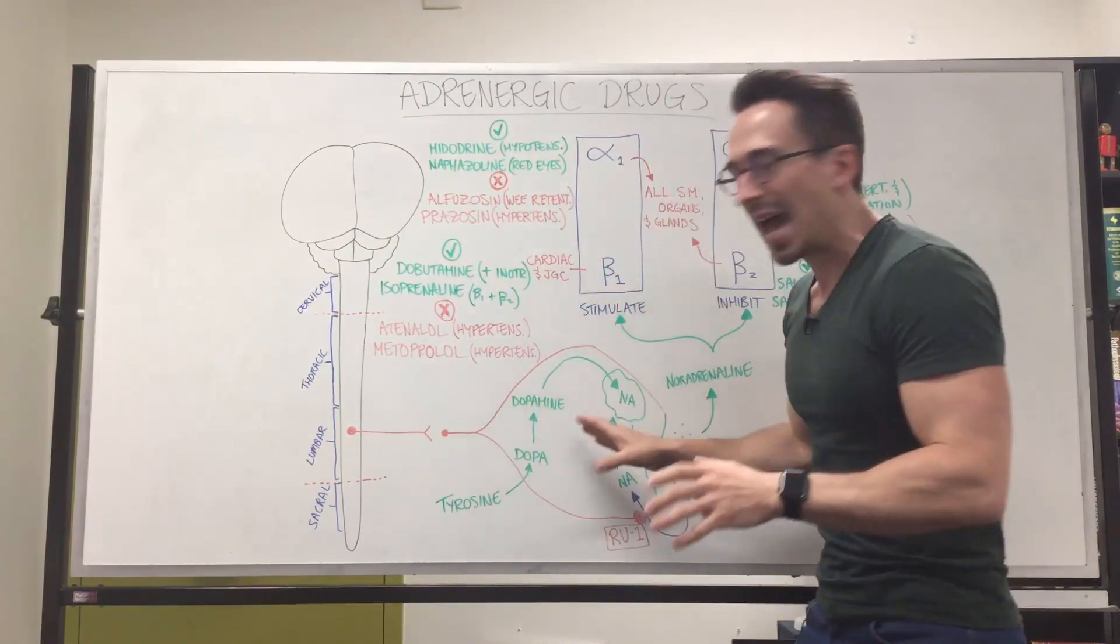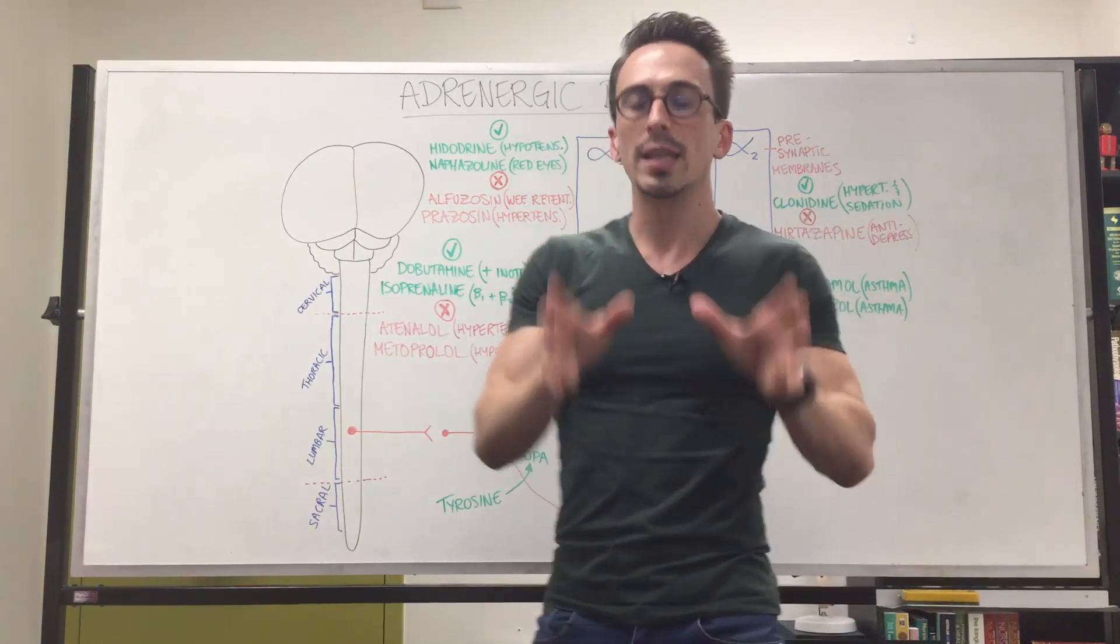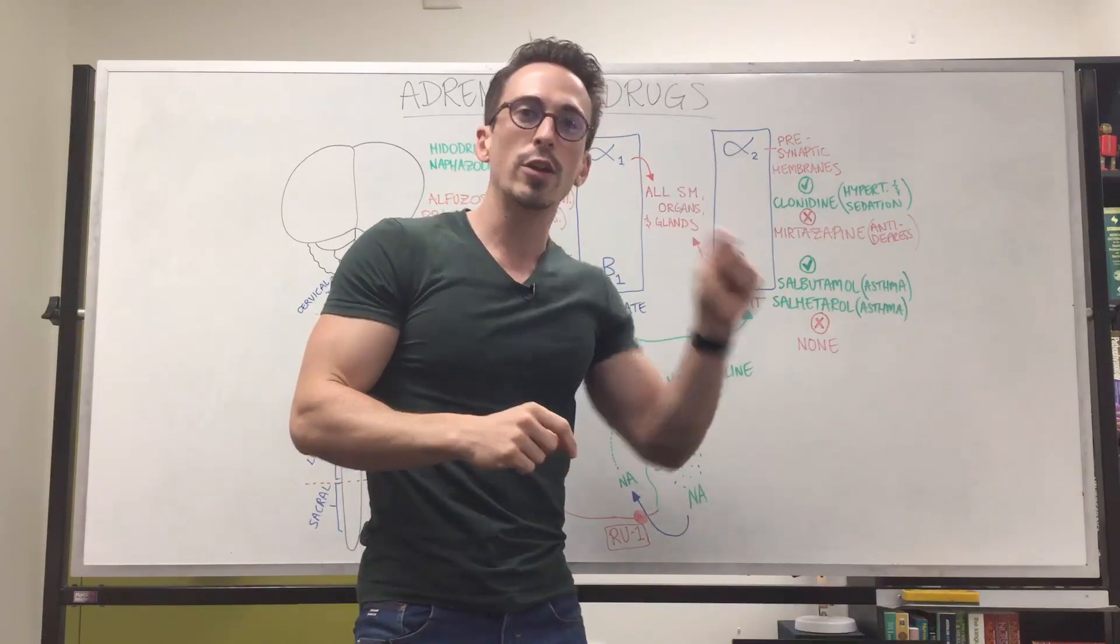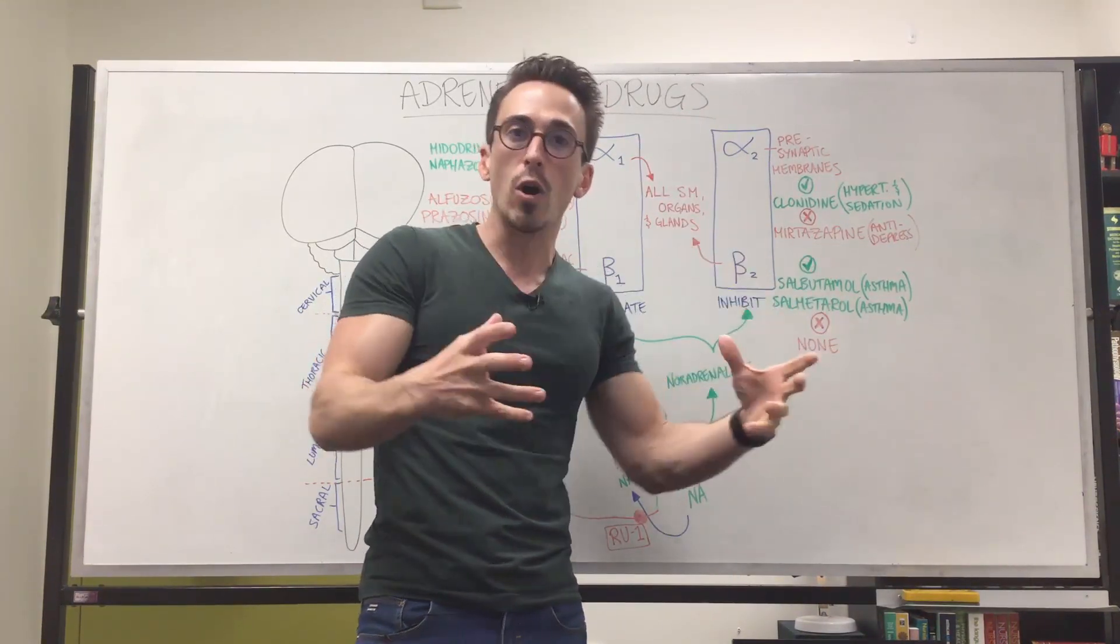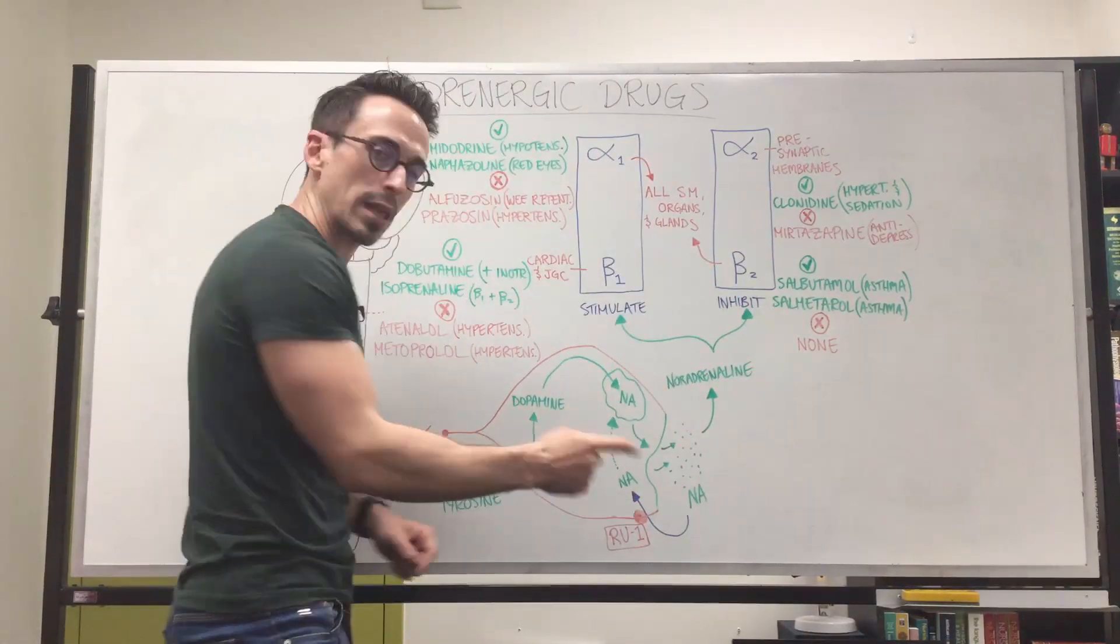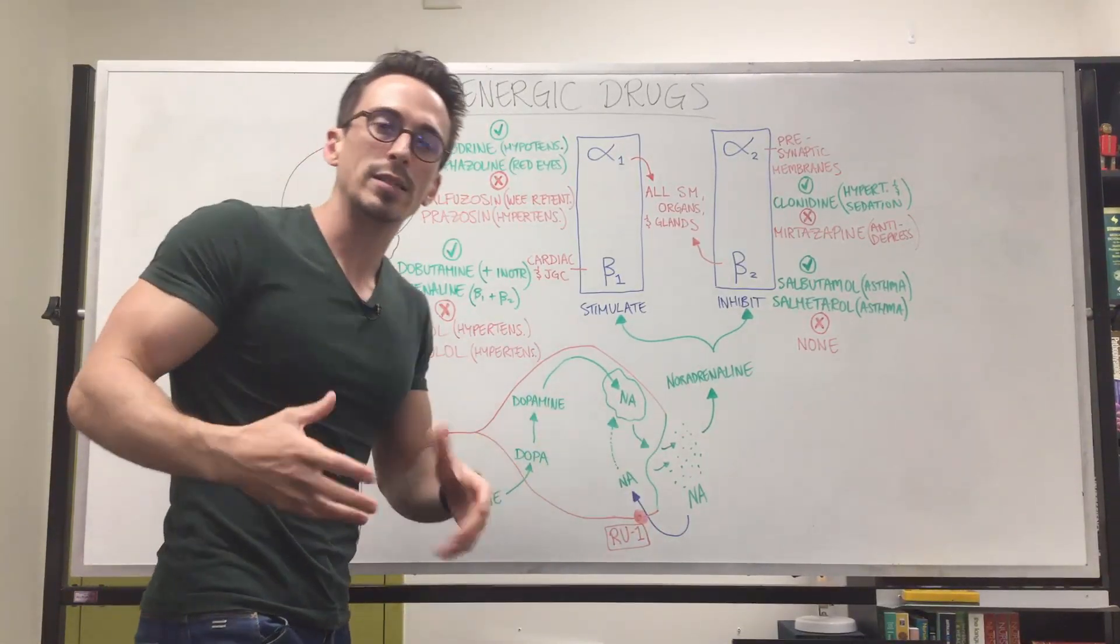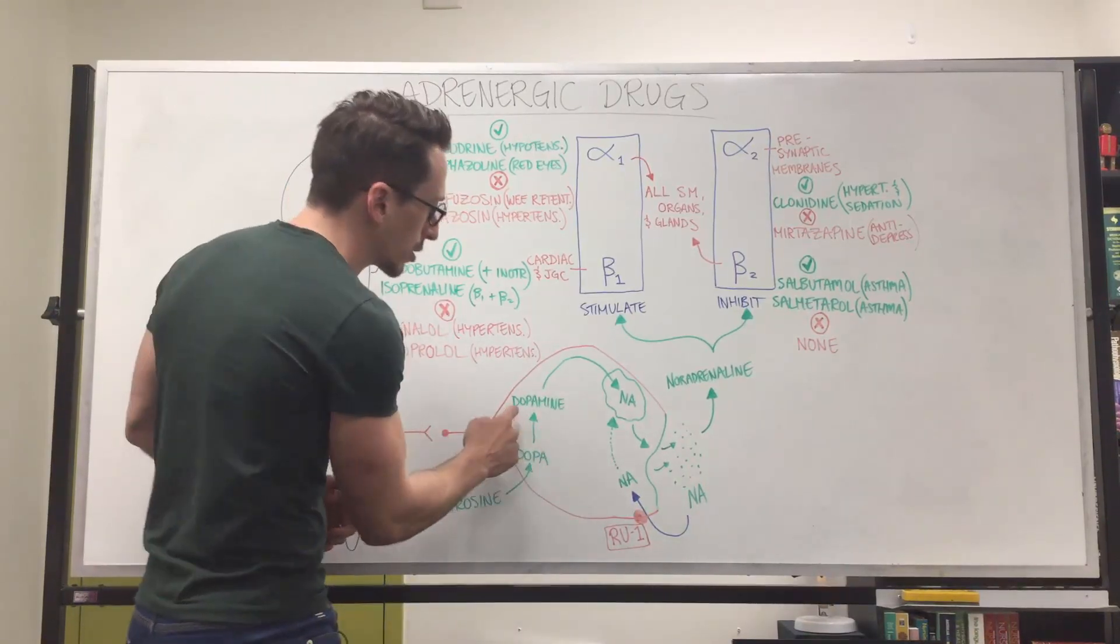Now when we look at the sympathetic nervous system, noradrenaline is the neurotransmitter that's used to speak to all these various organs or glands to activate them to have their role in the sympathetic nervous system response. Noradrenaline is produced in these sympathetic neurons. The way it's produced is tyrosine, which is an amino acid that you get from your diet, will jump into these neurons and turn ultimately into dopamine.